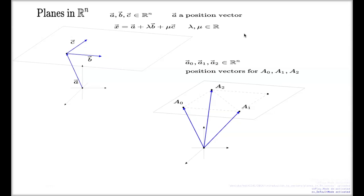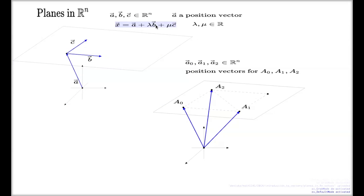Sometimes the pair of letters t and s is also used as parameter names. The reason we call this a vector equation parametrization for a plane is the same as for lines: when you freely alter the values of λ and μ, the tip of the vector x travels across this plane.